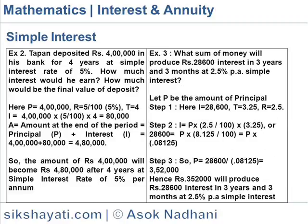Tapan deposited Rs.400,000 in his bank for 4 years at a Simple Interest Rate of 5%. How much interest would he earn? How much would be the final value of the deposit?